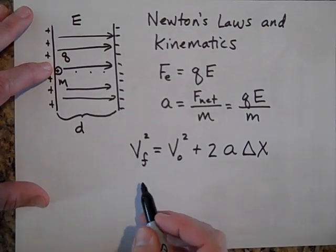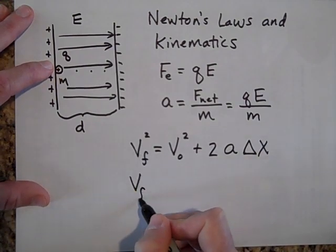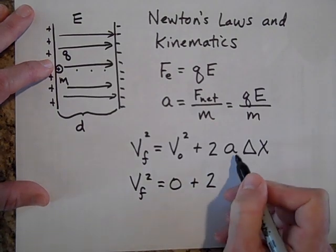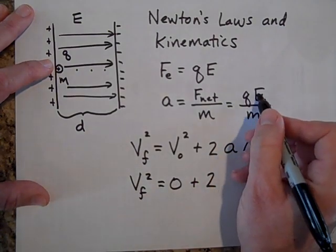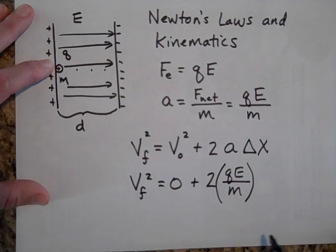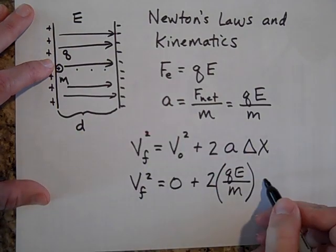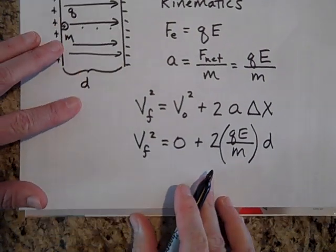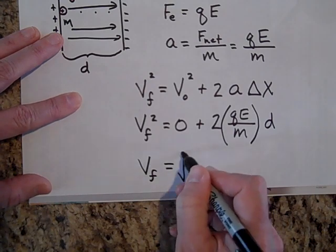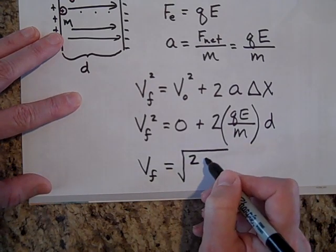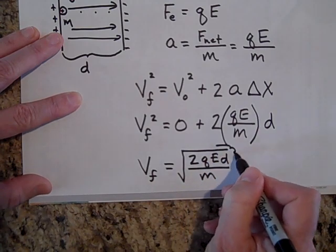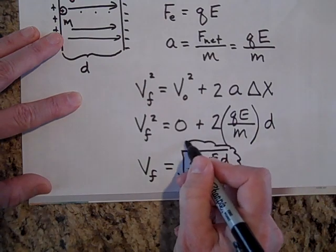Okay. So V final squared, that's what we're after. That will equal V initial squared, which is zero, plus 2 times A. Now A is going to be QE divided by M. That's your A times delta X and delta X is D. So the final velocity of that particle when it gets to the other side is the square root of 2QEd all over M. Remember that because we'd like to get the same thing using energy.